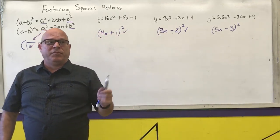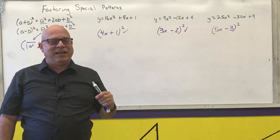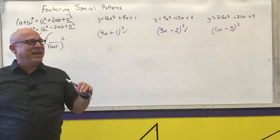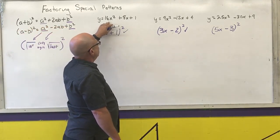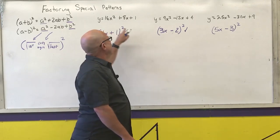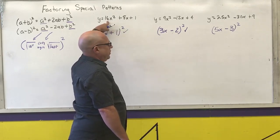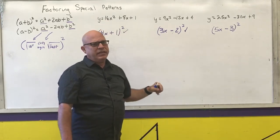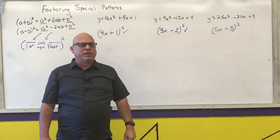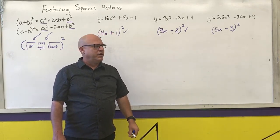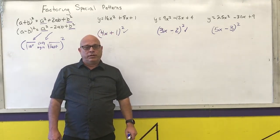Please check those middle numbers. There will be times that the middle number does not match, and if it does not match, then you're going to have to go back and use another method to factor — like grouping if the coefficient for the x squared term is not one, or factoring by inspection if the coefficient in front of x squared is one.